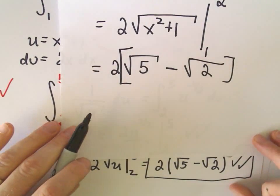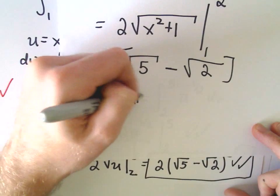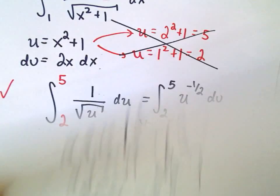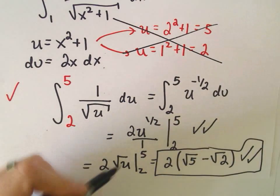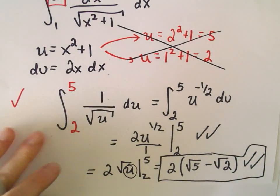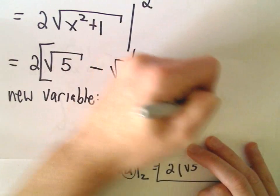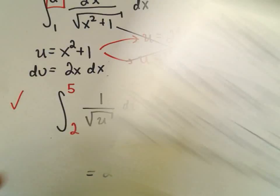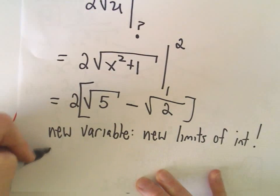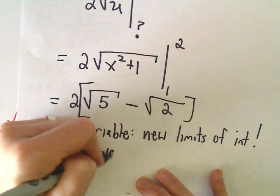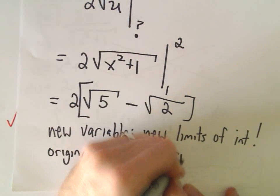So the moral of the story, first off, all I want to say is if you use a new variable, because we started with x, the first way I did it, I evaluated it all in terms of u, a new variable. It's somebody different. So new variable, we need to use new limits of integration. And that's it. That's what you need to remember. Likewise, if you convert it back into the original variable, we started with x and we finished out with x, then use the original limits. That's it.